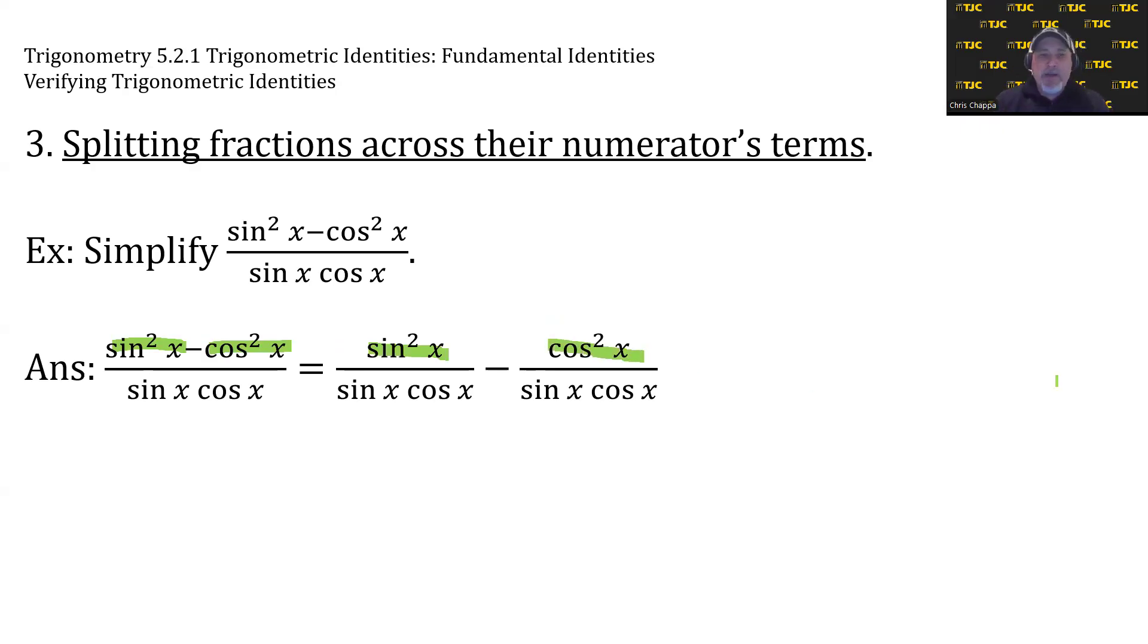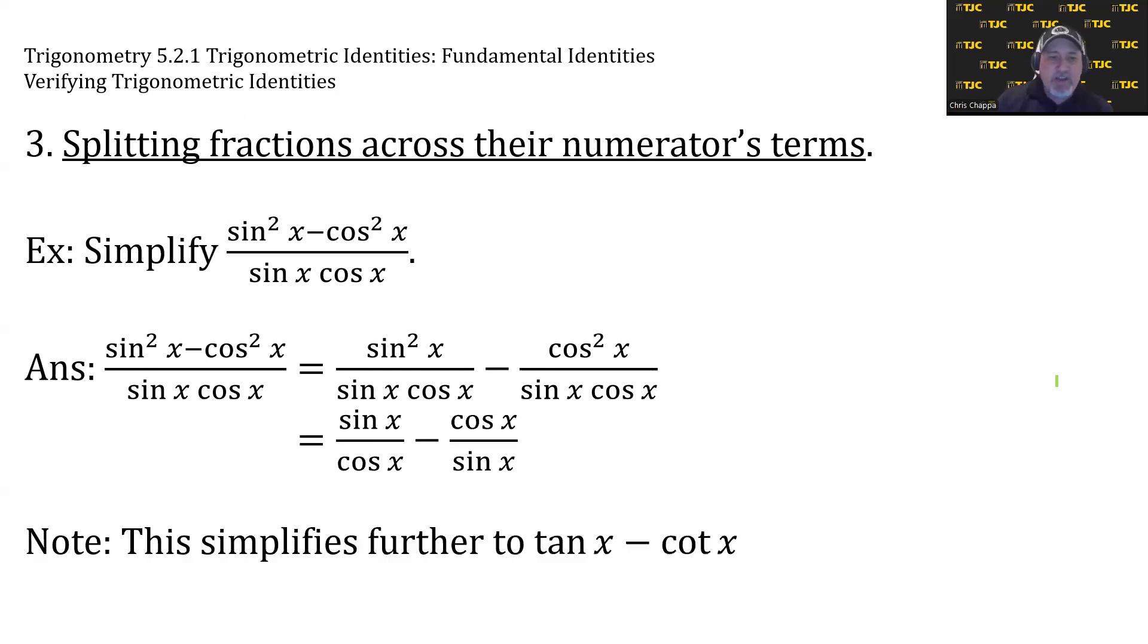Doing this removes the minus sign from the numerator, puts it between the fractions, and now makes both fractions eligible for reducing. The first fraction we can reduce by sin x, the second fraction by cos x, and we would get (sin x)/(cos x) - (cos x)/(sin x). And if you're on your game, you recognize that both of these are quotient identities and would simplify further to tan x - cot x.